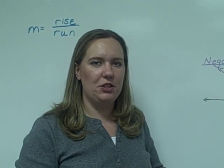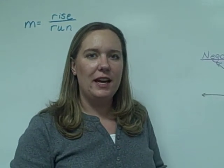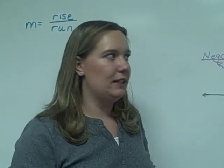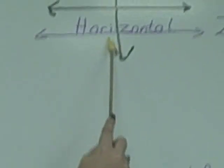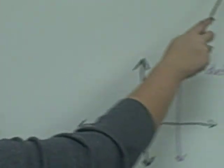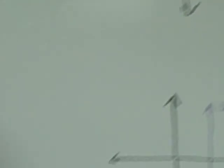There are also two special lines that we have to consider the slopes of. These are horizontal lines and vertical lines. Horizontal lines are lines that run from side to side and they have a slope of zero. Remember that horizontal and zero both have z's in them.